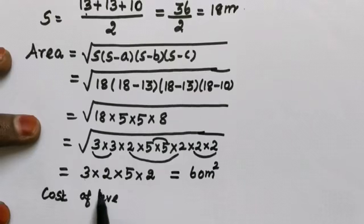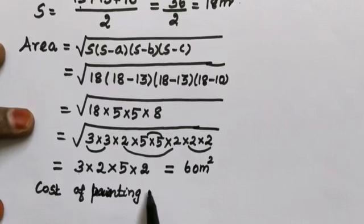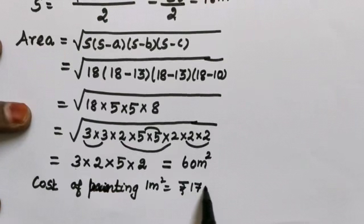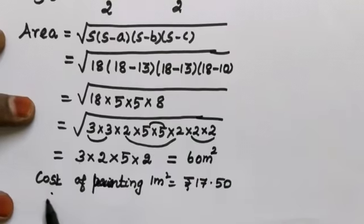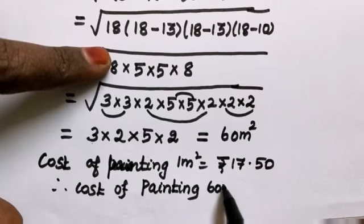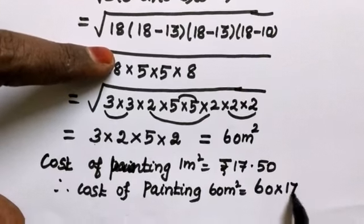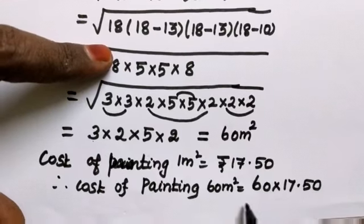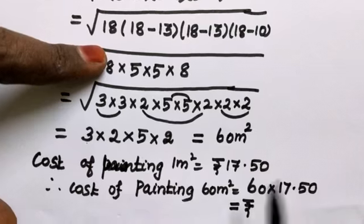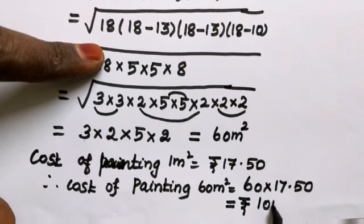Cost of painting — 1 meter square costs Rs. 17.50. Therefore, cost of painting 60 meter square: multiply 60 into 17.50. Cost of painting equals Rs. 1,050.